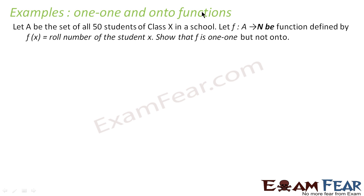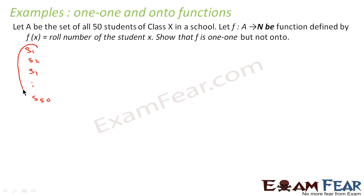The question says: let A be the set of all 50 students of Class 10 in the school. There will be a function A to N, defined by f(x) = roll number of student x. We have to show that the function is one-to-one but not onto. There are students 1, 2, 3, up to student 50 — so there are 50 students in the class.